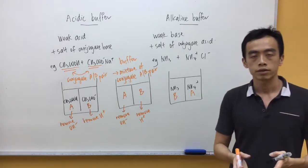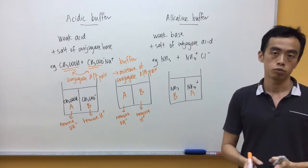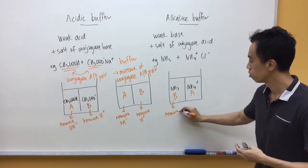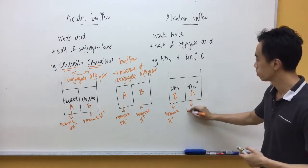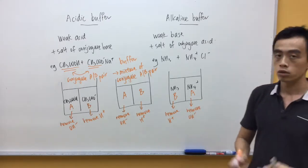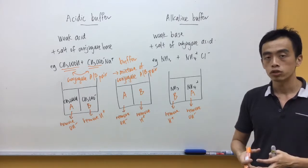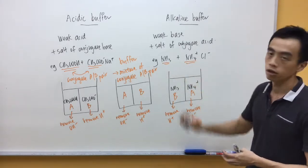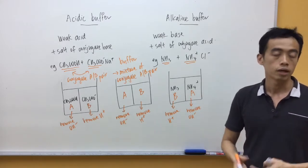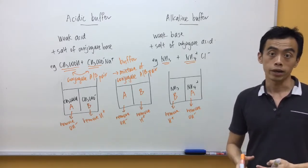When I add H+, the base will remove the H+. And when I add OH-, the acid will remove the OH-. Again, what you notice is this particular mixture of NH3 and NH4+ are related to each other. They are a couple. They are a conjugate acid-base pair.